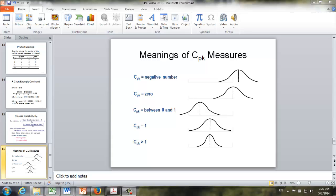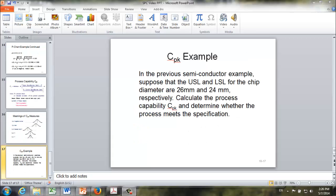Now let's turn to an example and see how it works. Let's follow our previous semiconductor example. Suppose that the upper specification limit and lower specification limit for the chip diameter are 26 millimeters and 24 millimeters respectively. And we would like to calculate the process capability CpK and determine whether the process meets the specification or not.